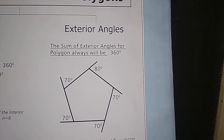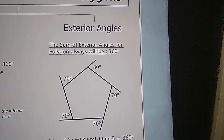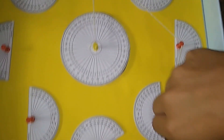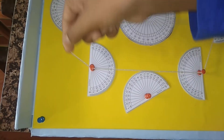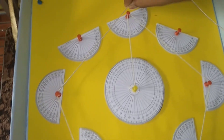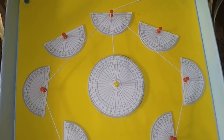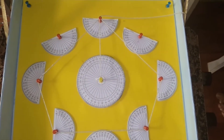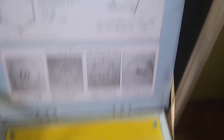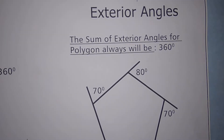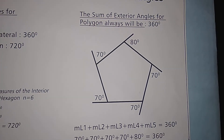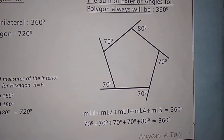Now we take a pentagon to measure exterior angles. See, this is our pentagon. Now we know that the sum of exterior angles for any polygon will always be 360 degrees. So we examine this fact with my working model here.